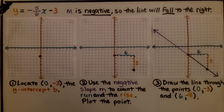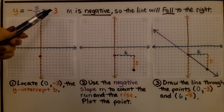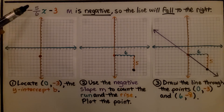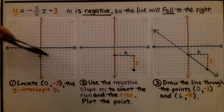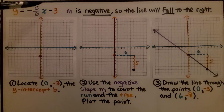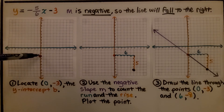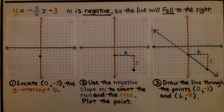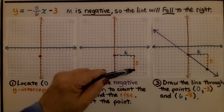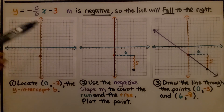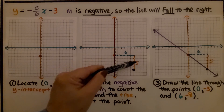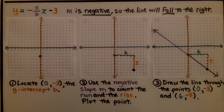Now in this equation, we have a negative slope and a negative y-intercept b. Since we have a negative slope, we know the line is going to fall to the right. We locate negative 3 on the y-axis, which is down here below the x-axis, and we draw a point. Now we use that negative slope to count the run and the rise — it's going to go down because it's negative. We've got a 6 that we're going off to the side and a 5 that we're going down. We plot the point right there.